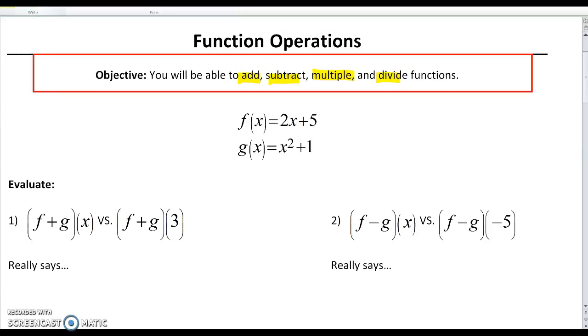Now we're going to do one example for each of those concepts using the following two functions. So we'll call f of x, 2x plus 5, and g of x is x squared plus 1. We're going to use those throughout.